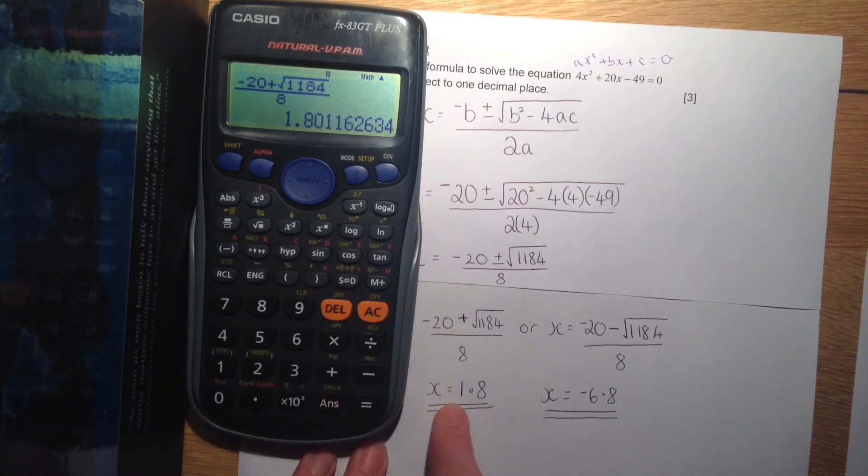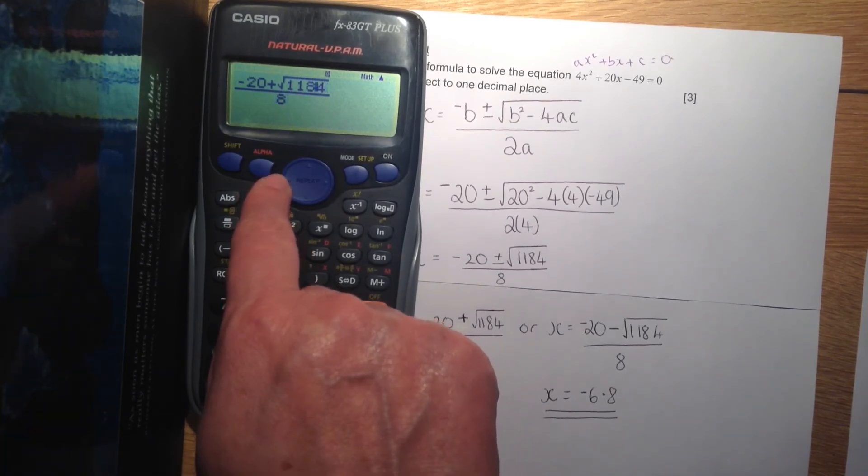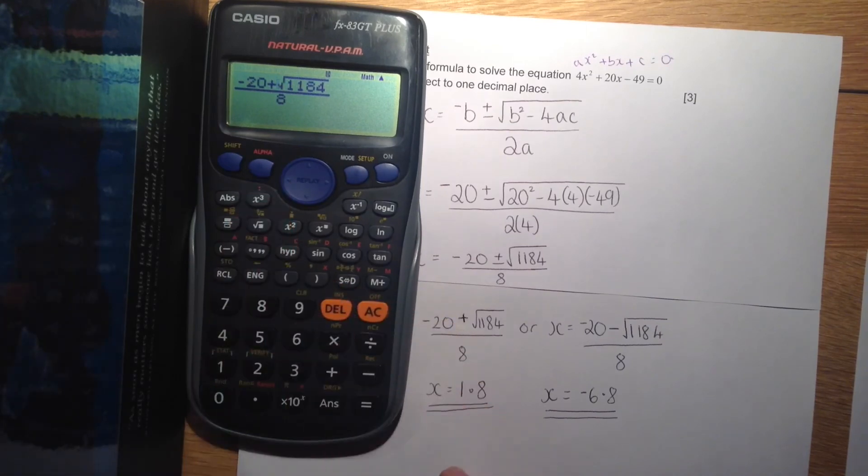And that gives me 1.8. Then there's no need to put it all back in. I can use this button to go back through to the plus and change it into a minus like that. Press equals and then I get my second value. Question asks me to round to one decimal point.